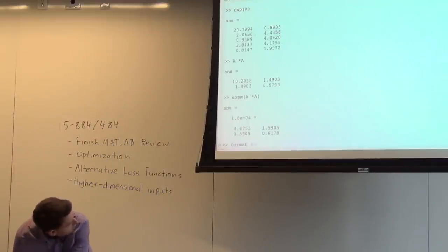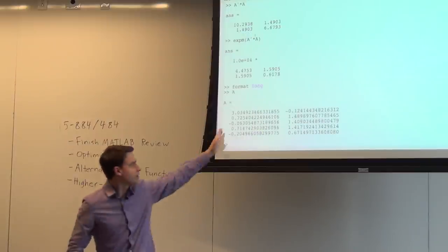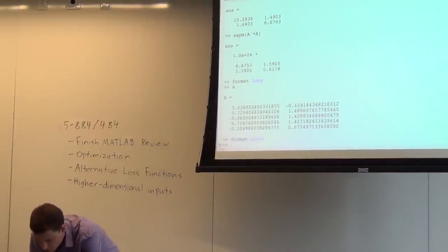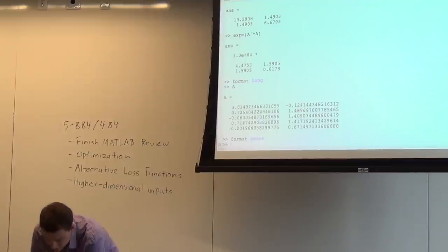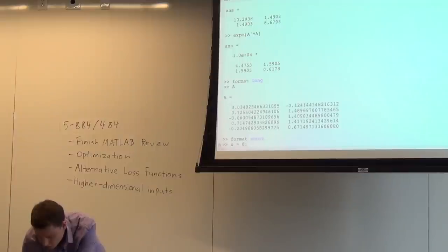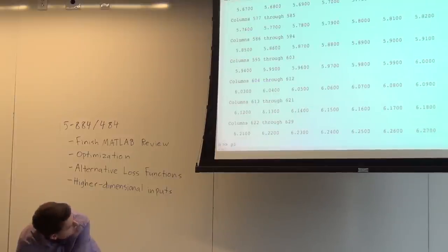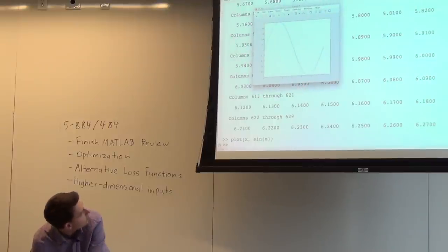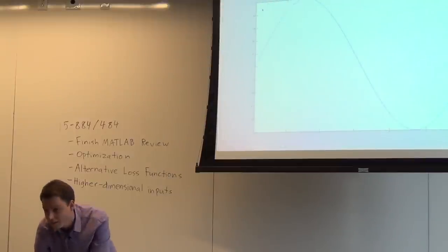Some handy commands are format long and format short. Format long gives you a lot more detail, and format short is the default. For plotting, I'll define x here to be a sequence that goes from 0 in increments of 0.01 to 2*pi. Then I can plot x and sine of x, and that gives a plot of a nice sine wave.